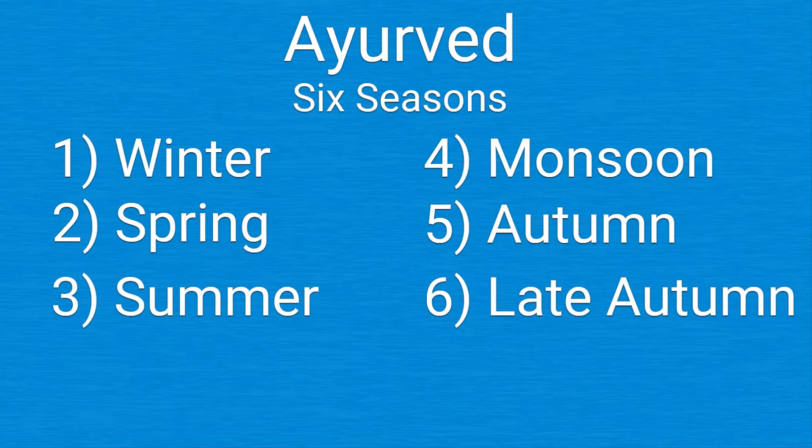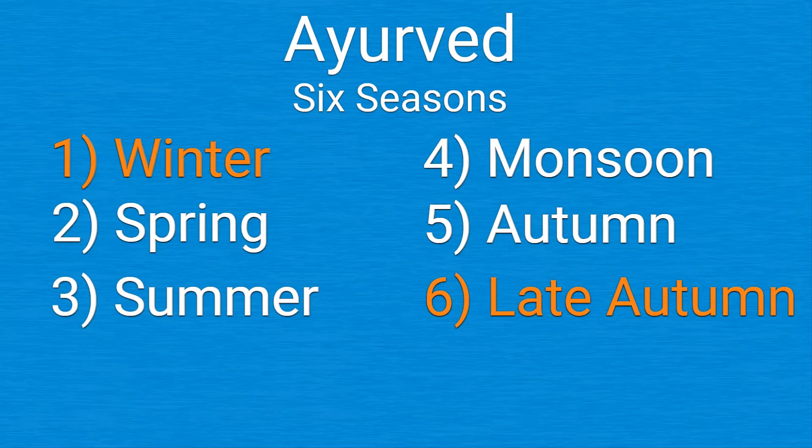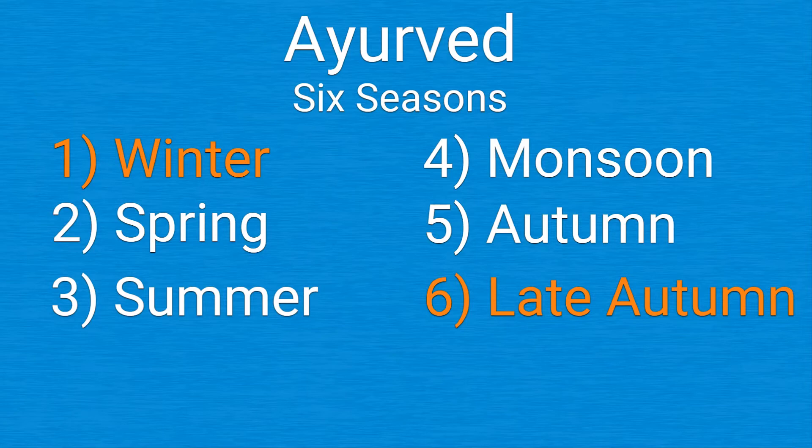Winter, spring, summer, monsoon, autumn, and late autumn. It's said only late autumn and winter seasons are the best for intercourse, as it naturally produces more shukra in our body. Summer and monsoon are most depleting for shukra.